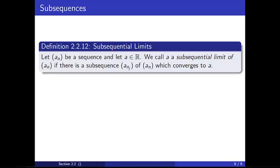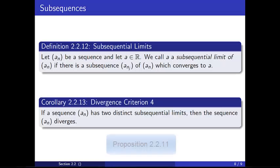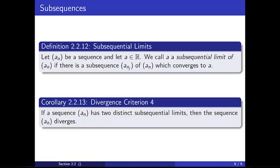As a final definition in this section, we have the notion of a subsequential limit. Let a_n be a sequence and let a be a real number. We call a a subsequential limit of the sequence a_n if there is a subsequence a_{n_j} which converges to a. The following corollary is the contrapositive of Proposition 2.2.11 and provides our fourth divergence criterion: if a sequence a_n has two distinct subsequential limits, then the sequence diverges.